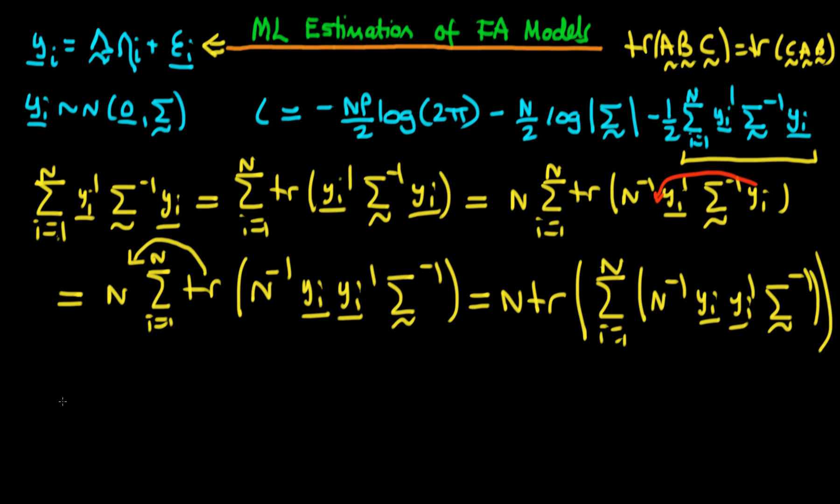Because sigma has no index of summation, we can rewrite this as n times the trace of the sum from i equals 1 to n of yi times yi transposed, all divided by n, times sigma to the power minus 1.